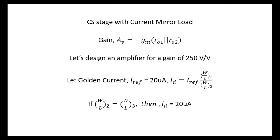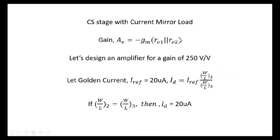The gain of the amplifier with current mirror load is almost same as the gain of the amplifier with current source load. So let's design an amplifier for a gain of 250 V per V.